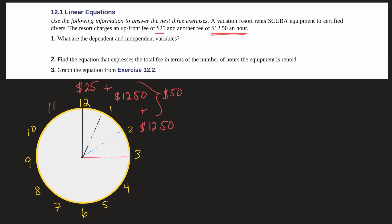So number one, what are the dependent and independent variables? In your mind I always want you to think about the independent variable as what is changing in this problem. We know that the fees are fixed. The upfront fee is $25, the per hour fee is $12.50. So what is actually changing? Well in this case what's changing is time. So our independent variable here is actually time, it's the $12.50 per hour. And then of course the dependent variable is just the cost.